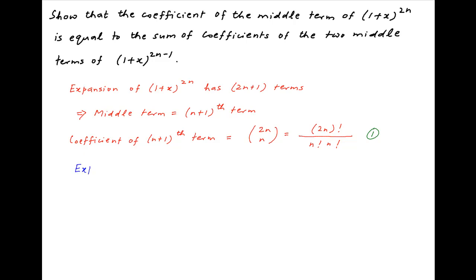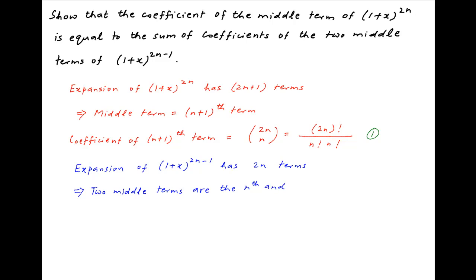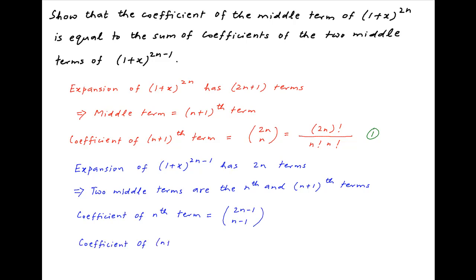Note that the expansion of (1+x)^(2n-1) has 2n terms. Therefore, the two middle terms in this expansion are the nth and the (n+1)th terms. The coefficient of the nth term is equal to C(2n-1, n-1) and the coefficient of the (n+1)th term is equal to C(2n-1, n).